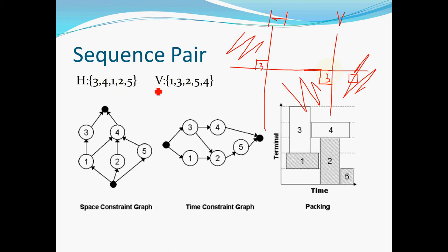According to this sequence pair, we can get the relationship of each pair and transform it into two graphs. This graph represents the space relationship and this graph represents the time relationship. According to these two graphs, we can derive a final template for packing.